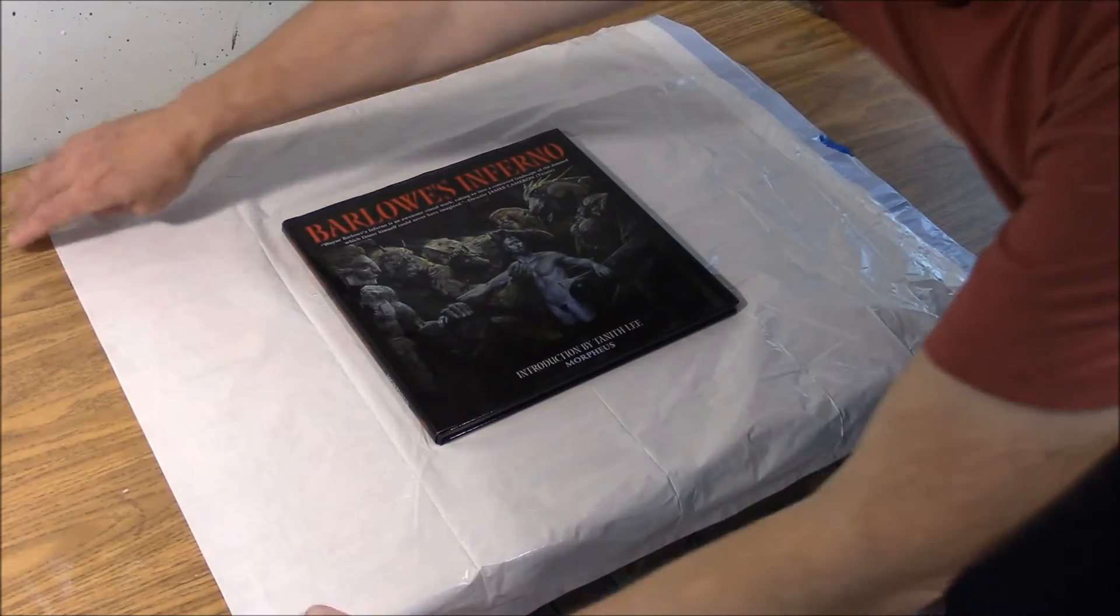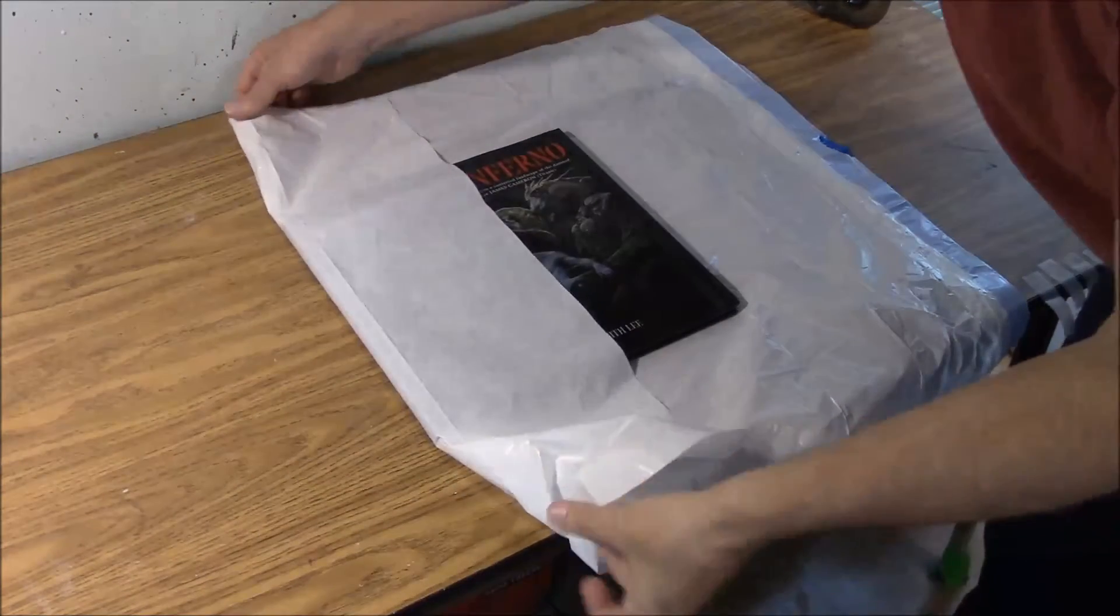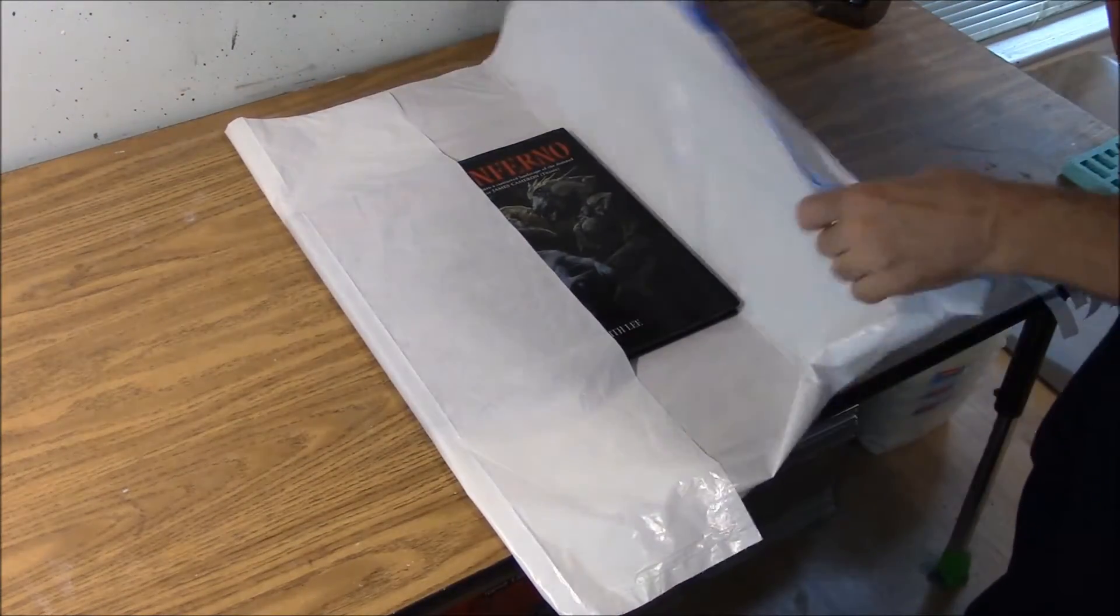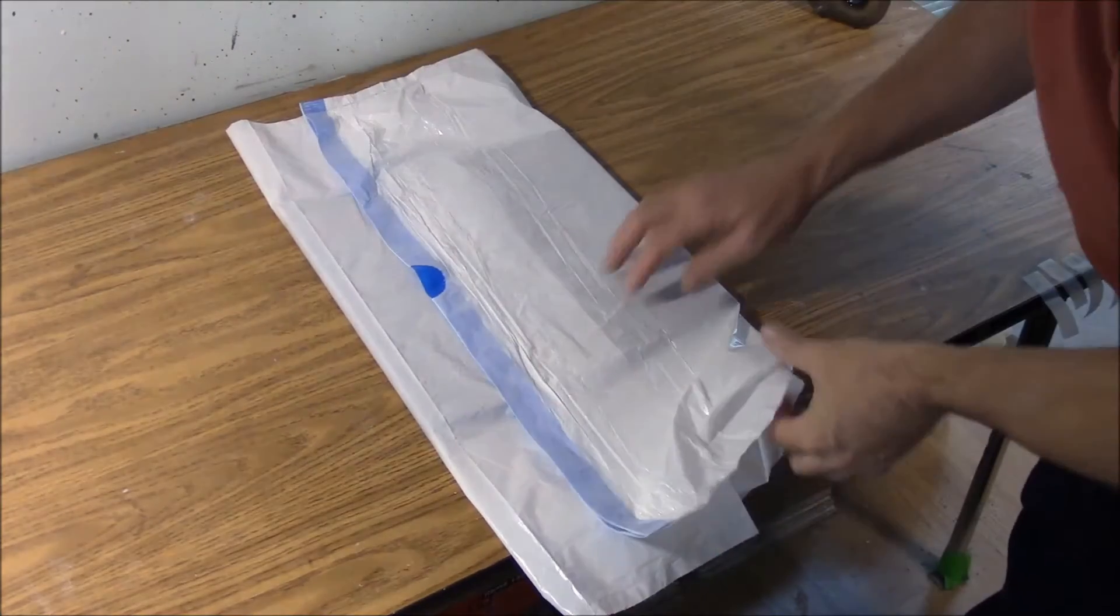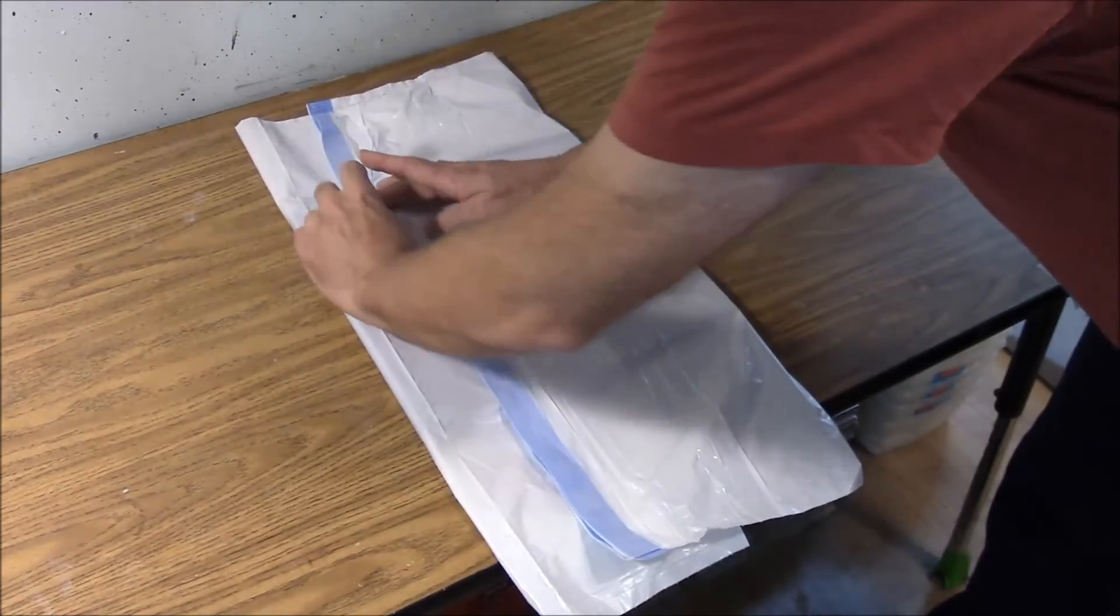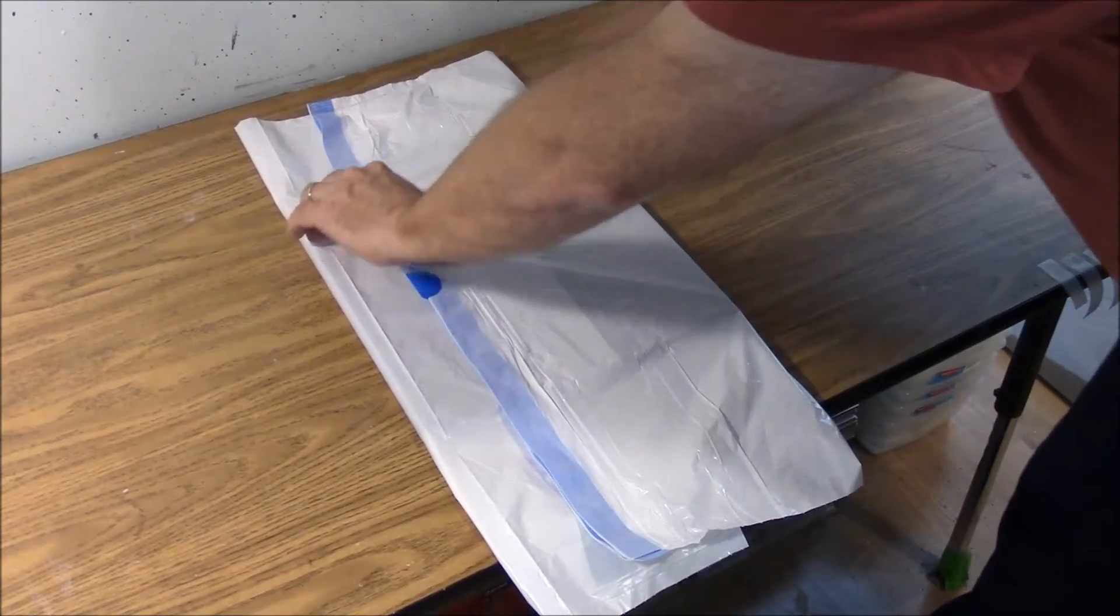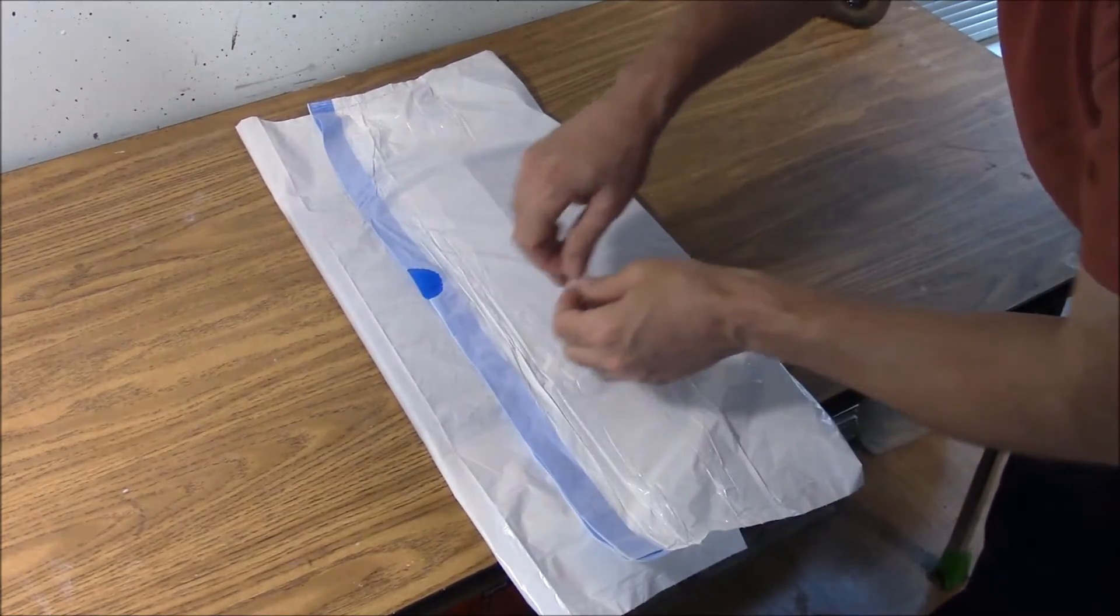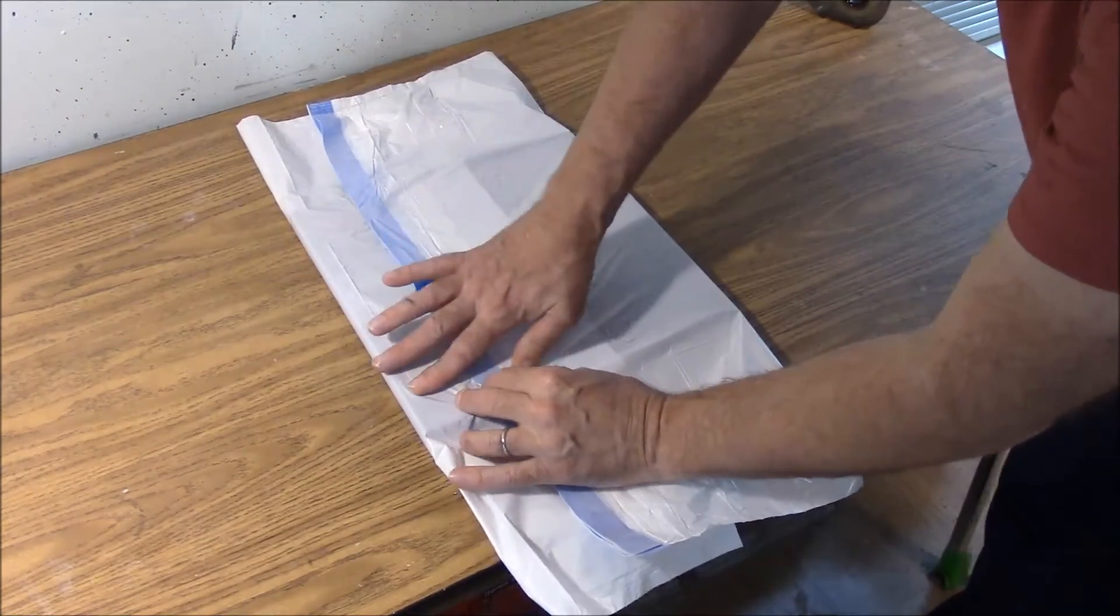So we're going to fold the trash bag over both ways and use a piece of tape to secure it, trying to get it stretched over fairly tight if you can.